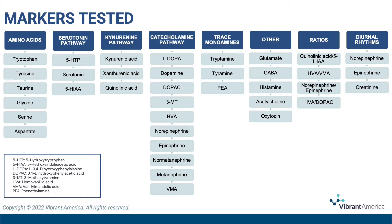Vibrant not only measures the major neurotransmitters, but they are also measuring precursors, metabolites, and end products of metabolism. This allows for a very comprehensive assessment of neurotransmitters and their metabolism so that we can understand where issues arise with any imbalances and what to do about them. The different pathways that are comprehensively mapped out include the serotonin pathway, kynurenine pathway, and the catecholamine pathway. We are able to assess the metabolism of these major neurotransmitters from start to end based on the analytes tested.